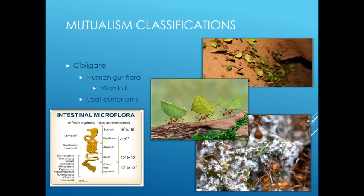Another way to split up mutualisms is by thinking about obligate versus facultative. Obligate means it's required — the organism will die without the mutualism. Like us and our vitamin K: we need our large intestine bacteria to give us vitamin K, and without it we will die. We are obligate mutualists with these bacteria. Those bacteria don't live anywhere else but the human gut, so without either species, both players in the interaction will die.